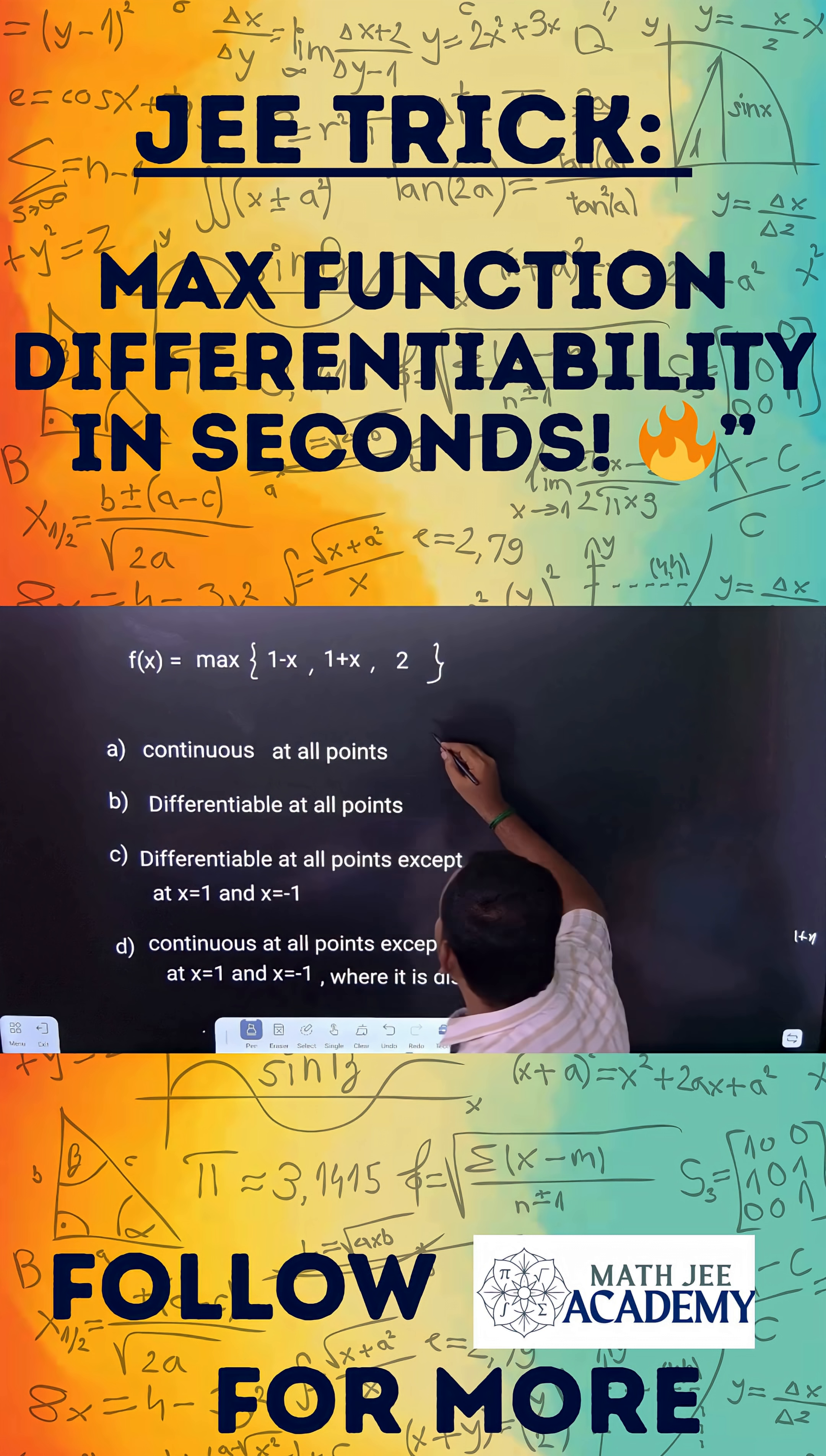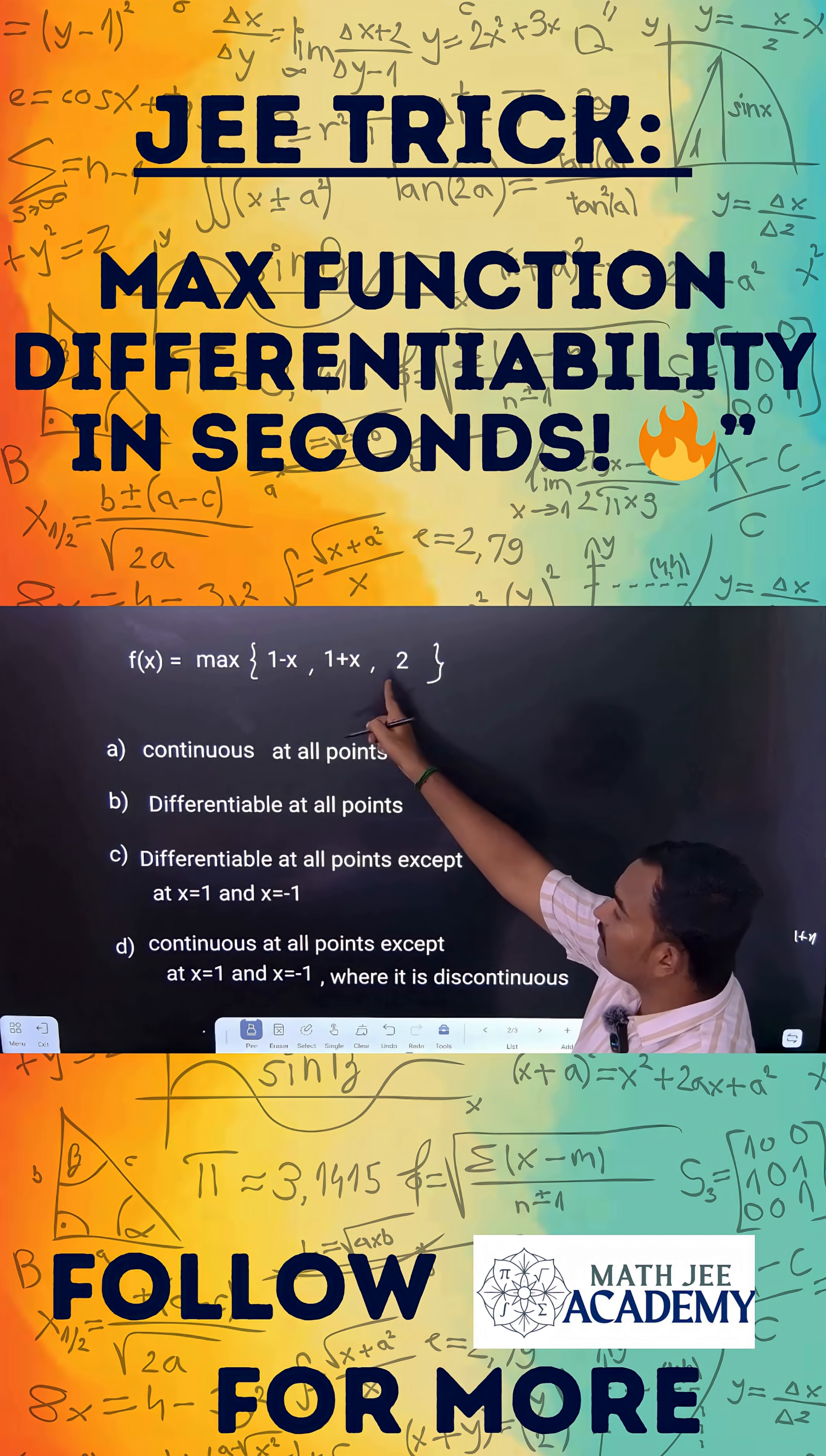First, for these kind of questions, what you can do? First, you have to find out where these two graphs are intersecting. So 1 plus x is equal to 1 minus x, you can equate the first and second.